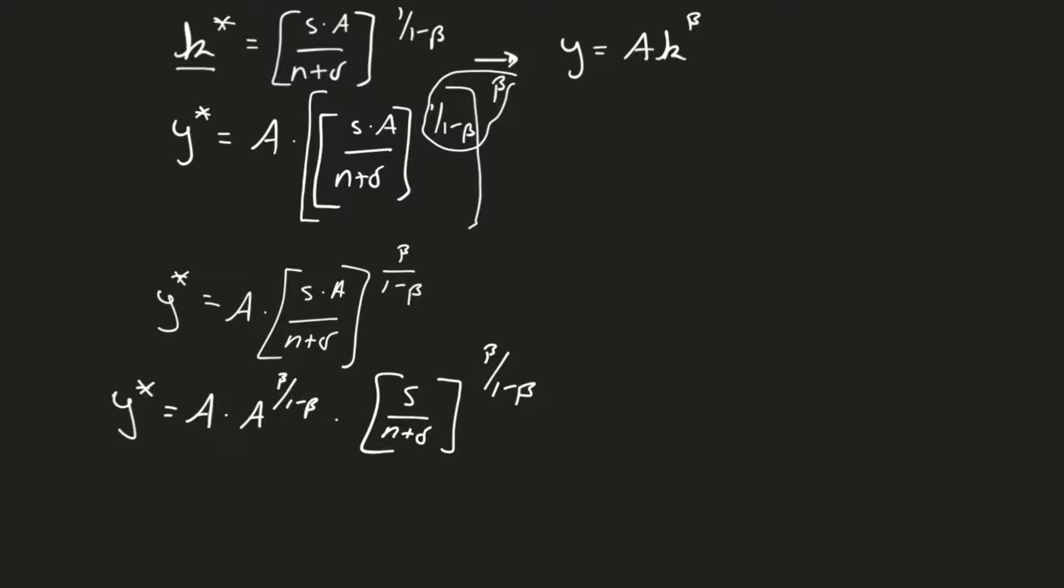Does that make sense? Hopefully that makes sense. All I did was I took this a, which is raised to the beta over 1 minus beta, and I pulled it out front.